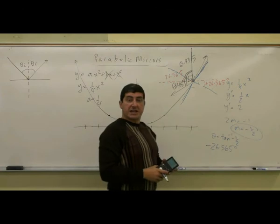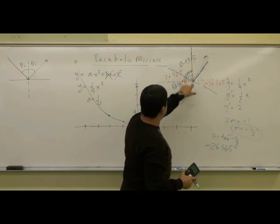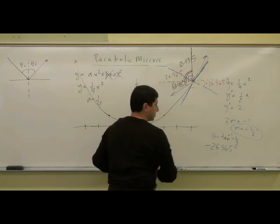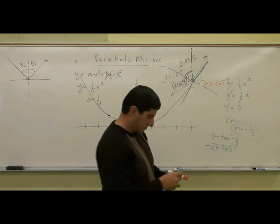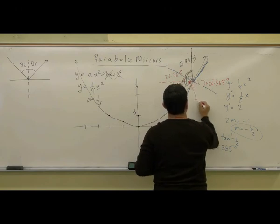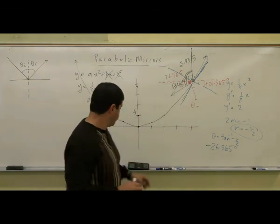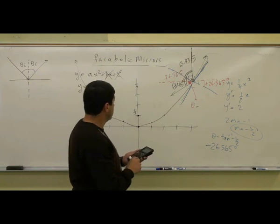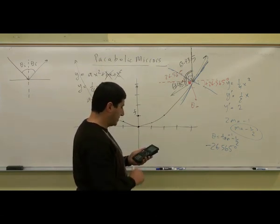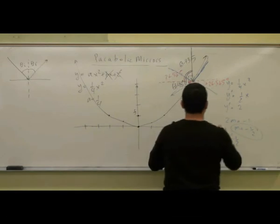Now, what about this remaining angle theta between the normal and the line toward the focal point? We know the large angle is 63.435° and the normal makes 26.565° with the horizontal, so theta = 63.435° − 26.565° = 36.87°.